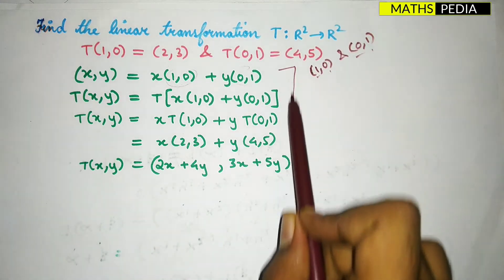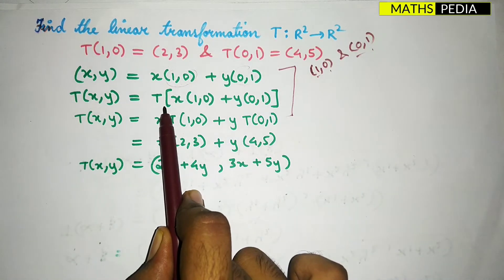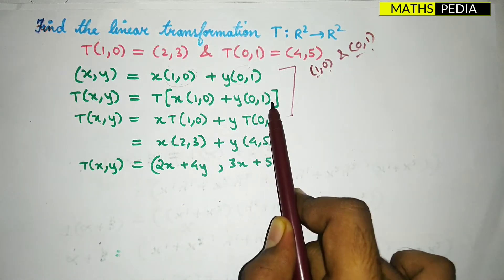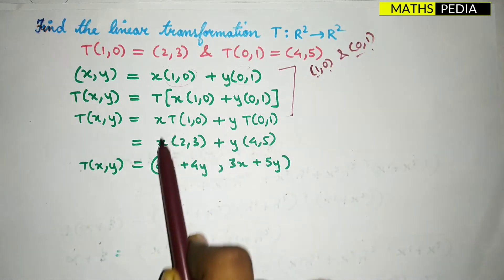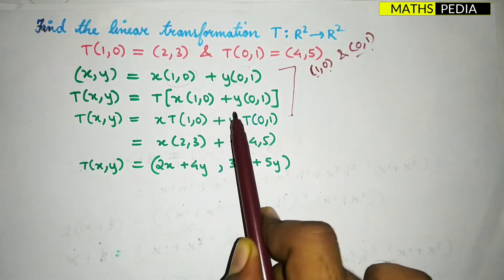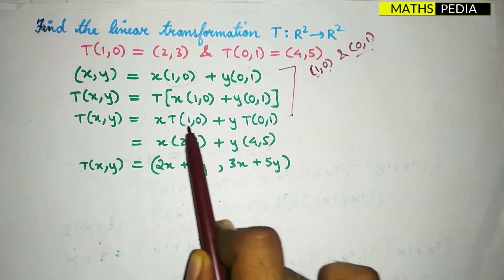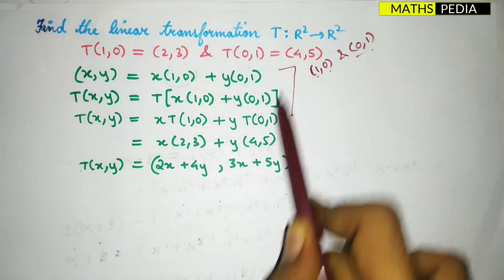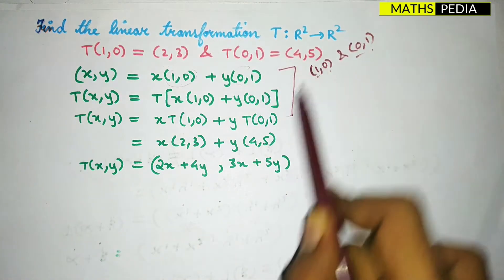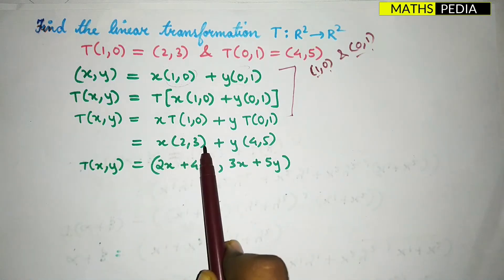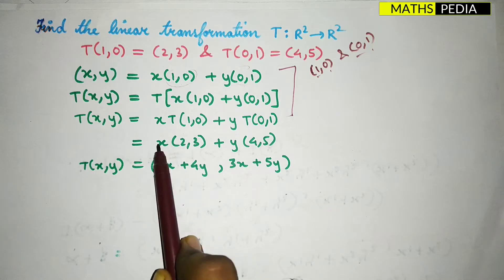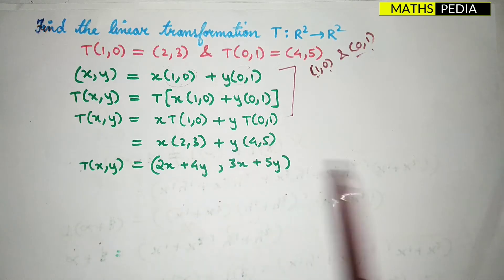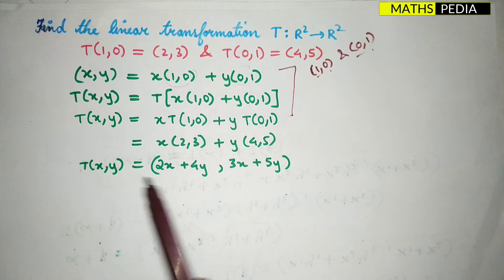Multiplying T on both sides, T of (x,y) equals T of x·(1,0) plus y·(0,1), which simplifies to x·T(1,0) plus y·T(0,1). T of (1,0) is given as (2,3) and T of (0,1) is given as (4,5). Multiplying x with (2,3) and y with (4,5) gives T(x,y) = (2x+4y, 3x+5y). This is the final answer.